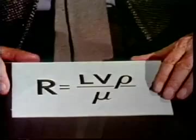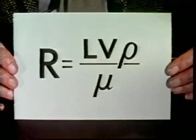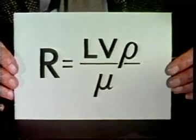Low Reynolds number flows are those in which inertia plays only a very small part in the conditions which determine the motion. Reynolds number for a flow which is characterized only by density and viscosity is defined as R equals L V rho over mu.